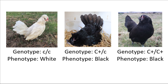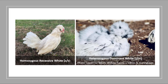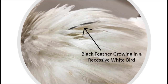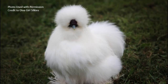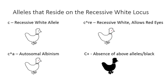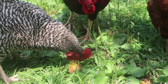When a bird is homozygous for recessive white, the white covers up both eumelanin (black pigment) and phaeomelanin (red pigment). Recessive white is much better at inhibiting black and red compared to dominant white, although occasionally it can be imperfect — for example, a recessive white bird may have one black feather the recessive white was unable to fully cover. Keep in mind that recessive white does not make a bird albino, as pigment still remains in the eyes, shanks, and skin. There are also a few other genes allelic to recessive white, including one which allows red eyes and another which is autosomal albinism — but you must already have those particular alleles in your flock.